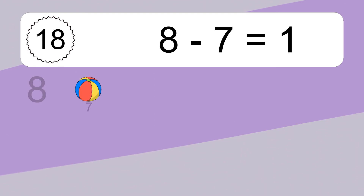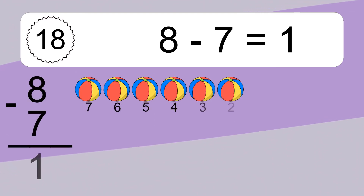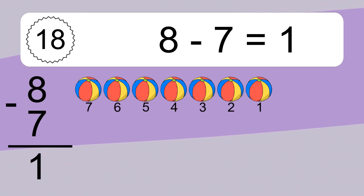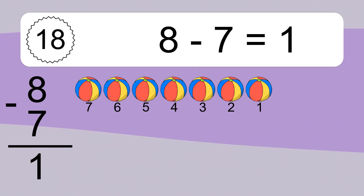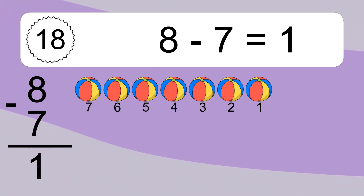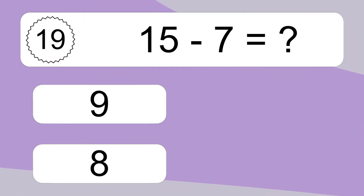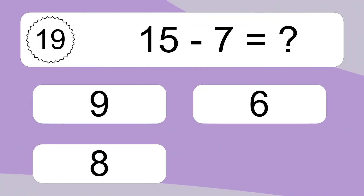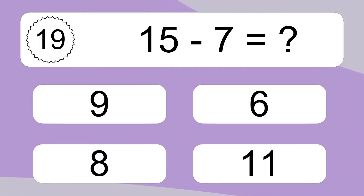8 minus 7 equals what? 8 minus 7 equals 1. Let's count it: 7, 6, 5, 4, 3, 2, 1.